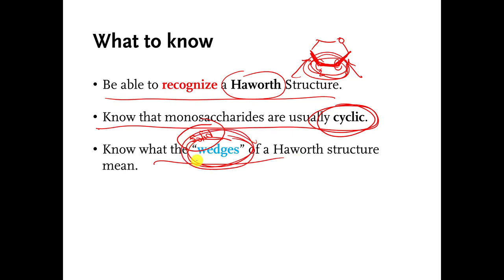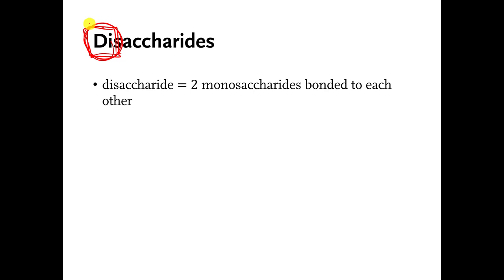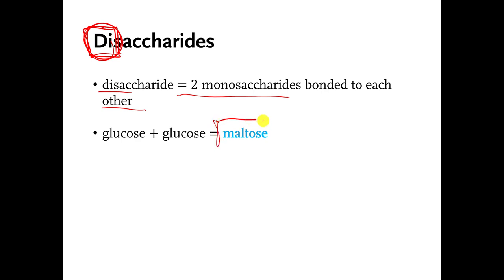Now we're going to move on to disaccharides. In an earlier video we said that disaccharides are made by connecting two monosaccharides together — that's what 'di' means: two. So disaccharides are two monosaccharides bonded to each other. There are many different kinds of disaccharide molecules. Maltose is a disaccharide — I'm just giving you examples.